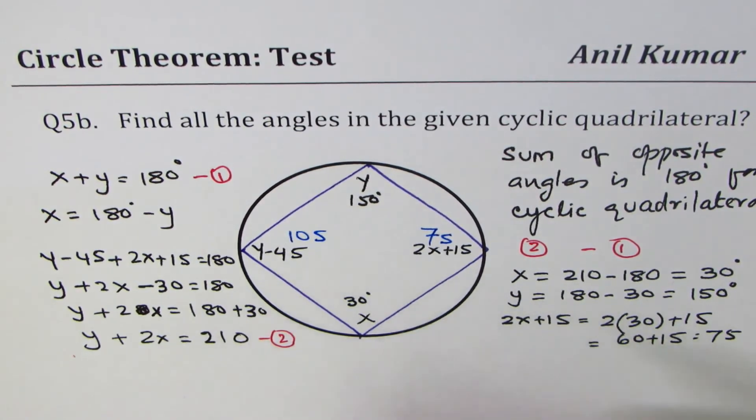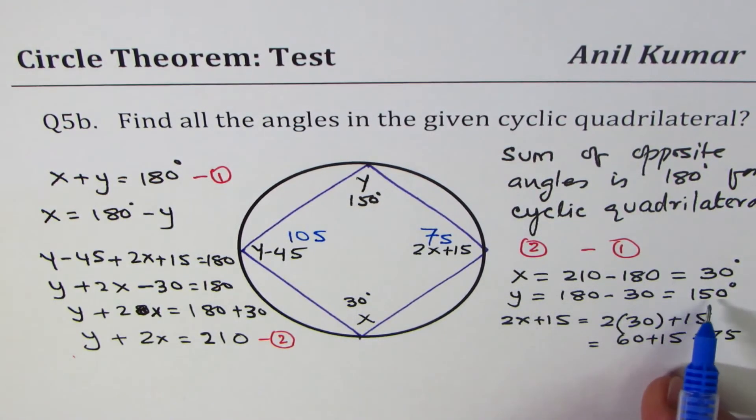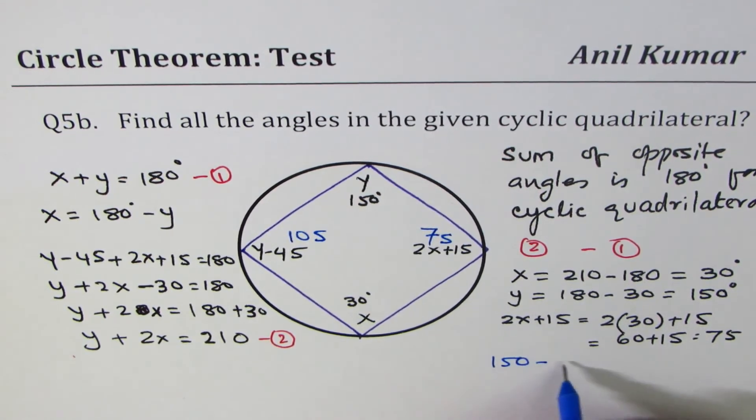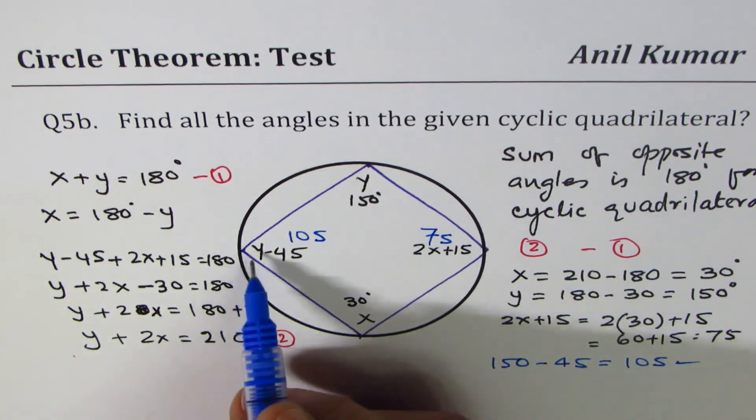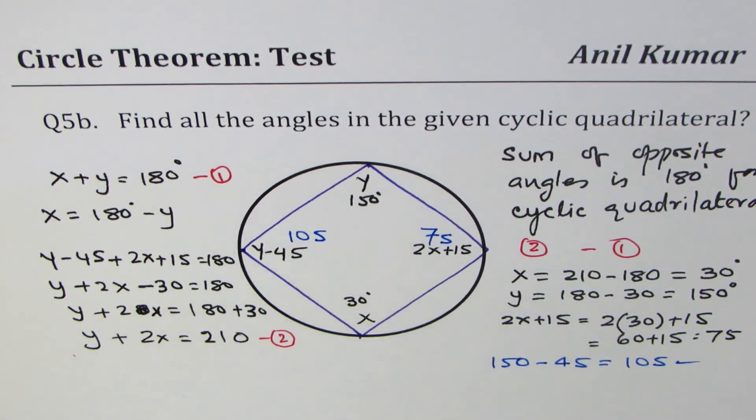And this one should be 105 to make it 180, correct. Or you could actually calculate: y is 150, so we do 150 take away 45, which is 105.